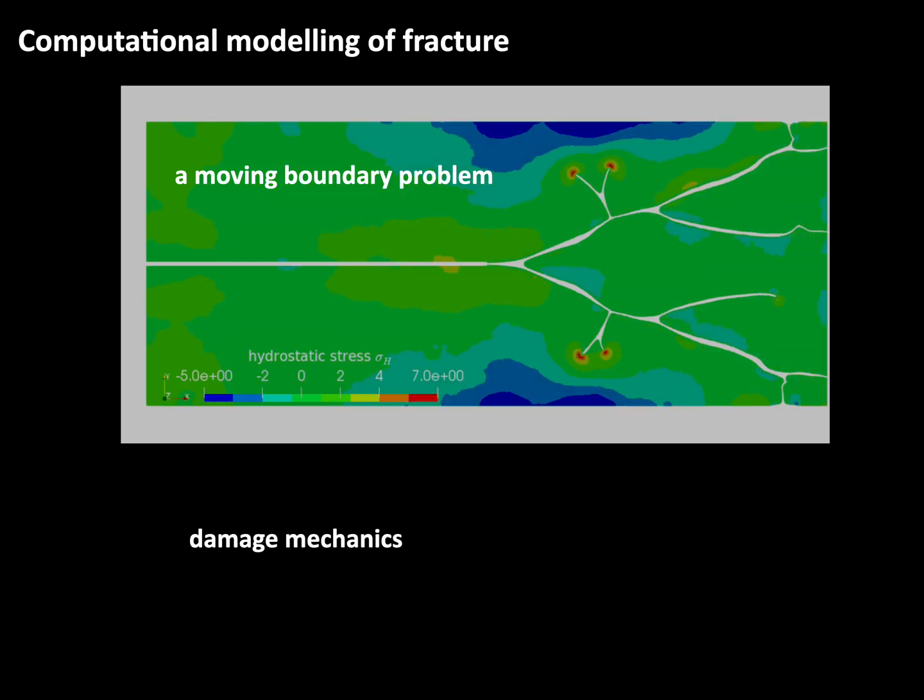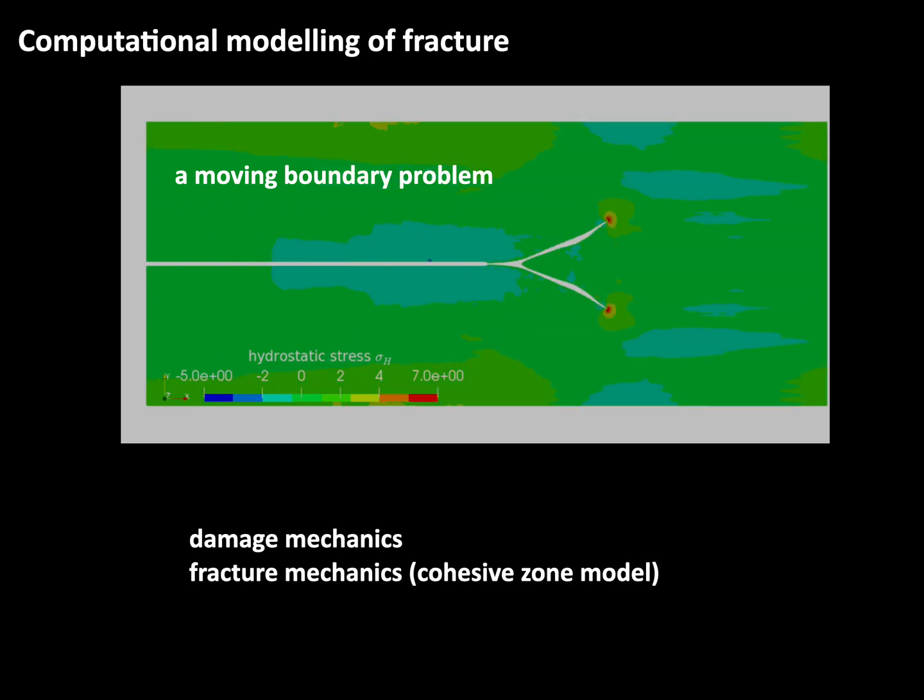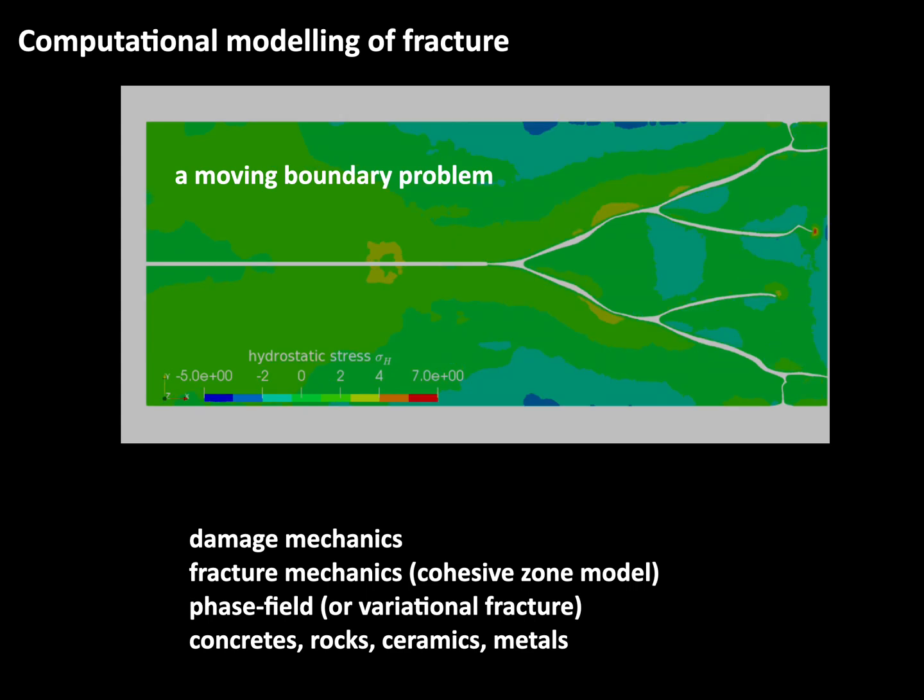And in order to deal with this problem, people developed different theories. First is damage mechanics and fracture mechanics, including cohesive zone model. And then one of the latest developments is phase field or variational damage. And these theories have been applied to different materials like concrete, rocks, ceramics, metals. I think all the materials available on earth. And I focus on the variational fracture. Not only because it's the latest player in this game, but it has some nice attributes.